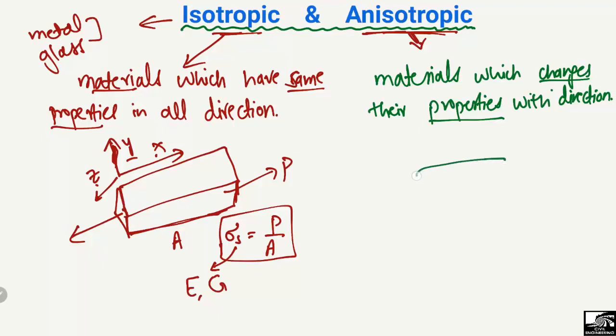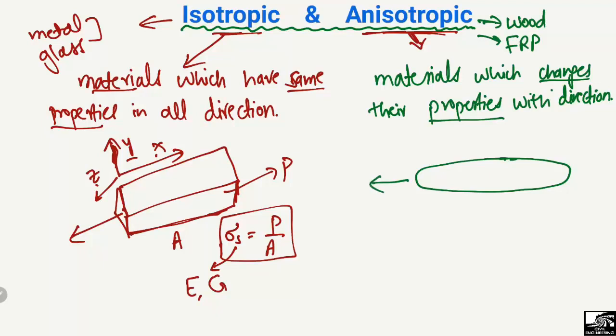Wood is the most common example of an anisotropic material. Also, fiber reinforced polymers — FRP — are also categorized as anisotropic materials. If we apply a load P to these materials, their properties in the x-direction will have different values.